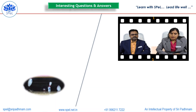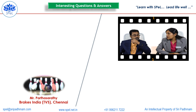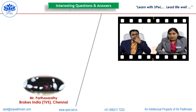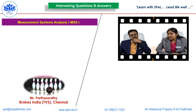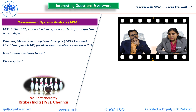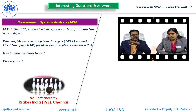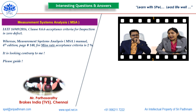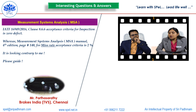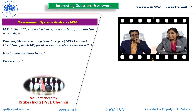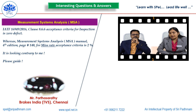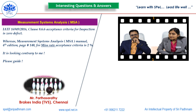The question is from Mr. Paapta Sadi of Breaks India TVS. He has a question on Measurement System Analysis, that is MSA. The question is: IATF 16949:2016 clause 8.6.6 states that the acceptance criteria for inspection is zero defect, whereas MSA manual fourth edition page 140 states the miss rate acceptance criteria is 2%. It is looking contrary to me.